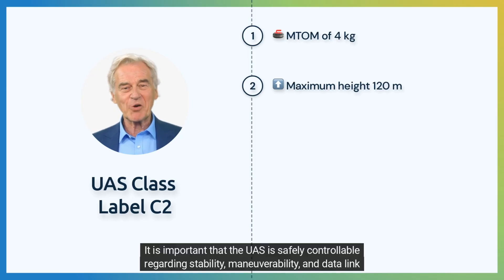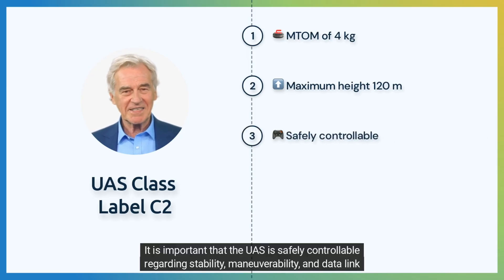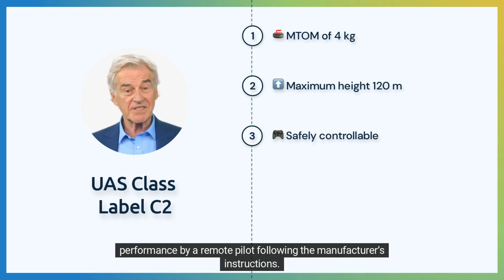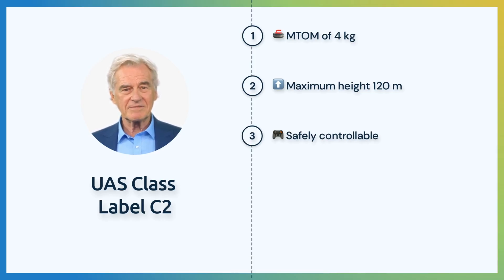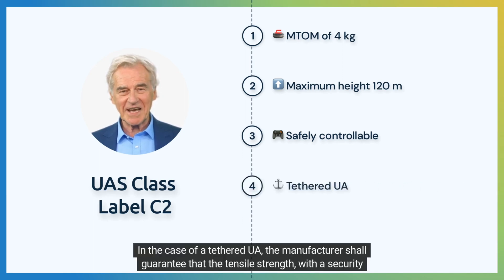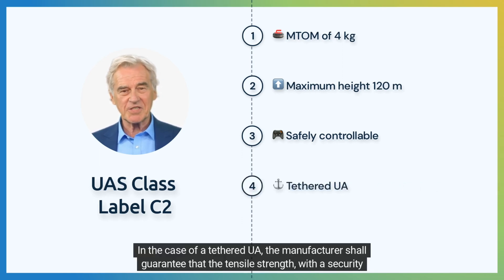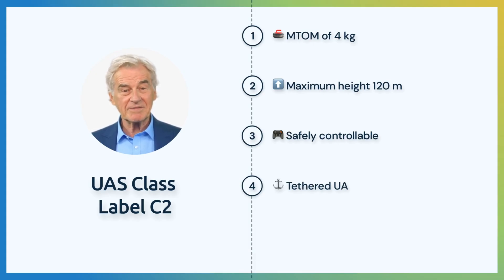It is important that the UAS is safely controllable regarding stability, maneuverability, and data-link performance by a remote pilot following the manufacturer's instructions. In the case of a tethered UA, the manufacturer shall guarantee that the tensile strength with a security factor is under a certain value.